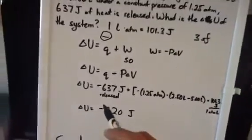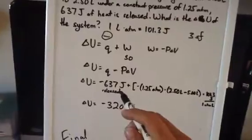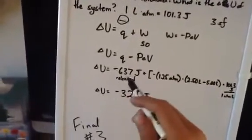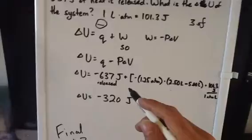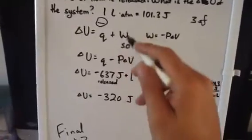Let's actually plug in all of our numbers. We said that we have 637 joules released, so that's negative 637. I'm just going to keep the plus sign here, and then just plug in for W.